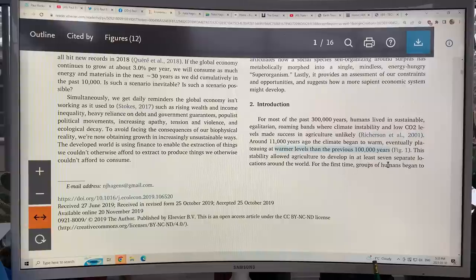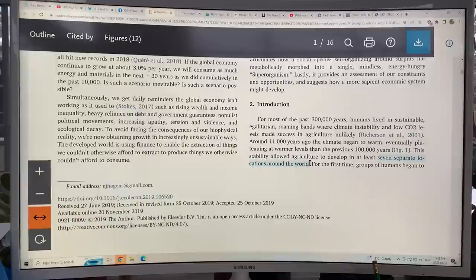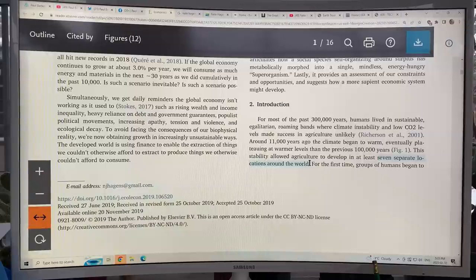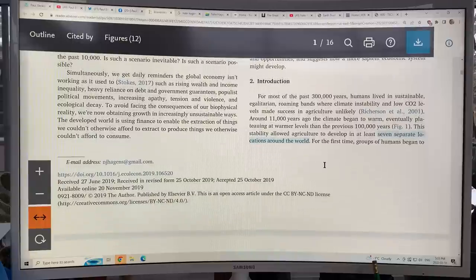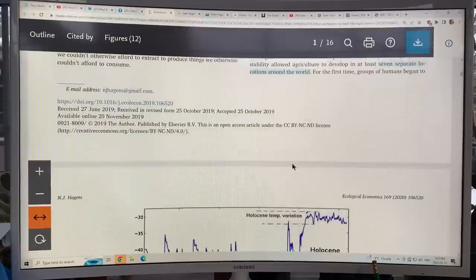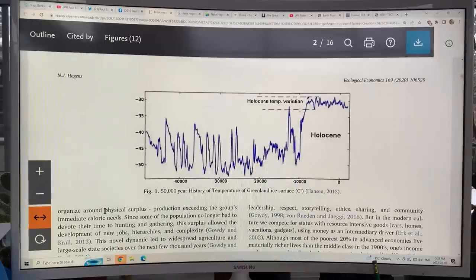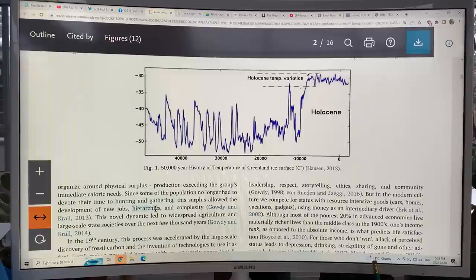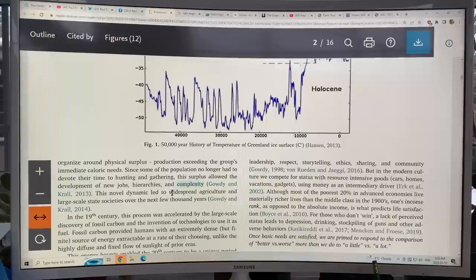Agriculture developed in at least seven separate locations around the world independently. That's what the current thinking is. Before we thought it all originated in the Fertile Crescent in the Middle East and then spread to other regions, but it developed in at least seven separate locations about the same time. For the first time, groups of humans began to organize around physical surplus. Production exceeded the group's immediate caloric needs. There were new jobs created, new hierarchies, new ways of organizing society, increasing complexity.